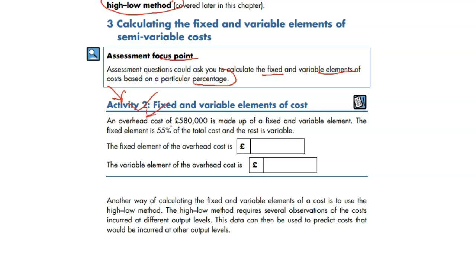An overhead cost - overhead means indirect costs, not a direct cost. Could be a production overhead, could be non-production overhead. These are just indirect costs. Could be rent, rates, insurance. So many things could be. We don't know yet, but the total cost is 580,000. This is made up of fixed and variable elements.